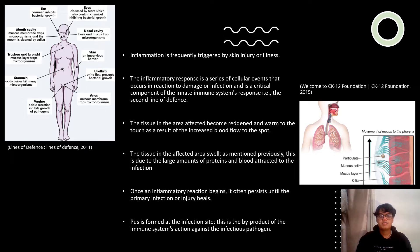The affected area becomes painful because of the surrounding tissue being inflamed. This results in mechanical pressure being applied towards the nerve cells. Once an inflammatory reaction begins, it often proceeds until the primary infection or injury heals. Pus is formed at the infection site, which is the byproduct of immune system action against the infectious pathogen.